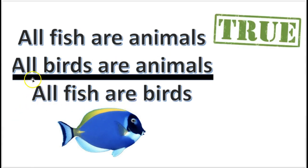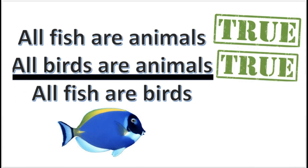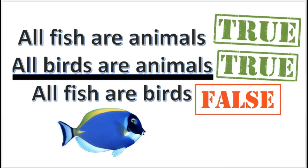Let's take a closer look at the first premise. We want to get true premises and a false conclusion. All fish are animals — that is true. Look at the next one: all birds are animals. Are all birds animals? Yes, that's true. So the conclusion says all fish are birds. Are all fish birds? No, that's false. So we've got true premises and a false conclusion.